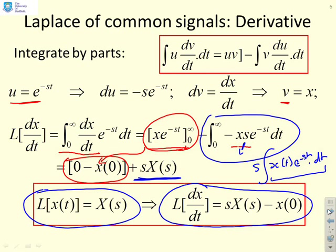A very simple formula for the derivative. So in fact, you just need to know the Laplace of the original signal x of t, multiply it by s, and minus the initial condition.